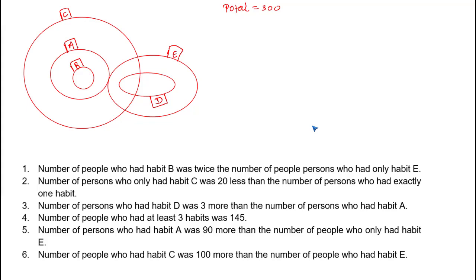Let's read the first additional statement: the number of people who had habit B was twice the number of people who had only habit E. Now let's assign variables to each region. Let x be the number of people in a region, y in another, p in another, q and r in others, and k and m in the remaining regions.